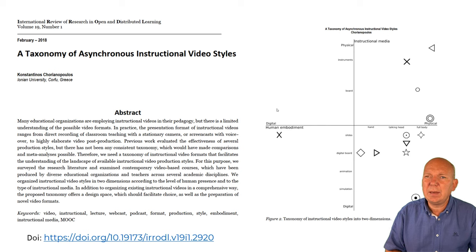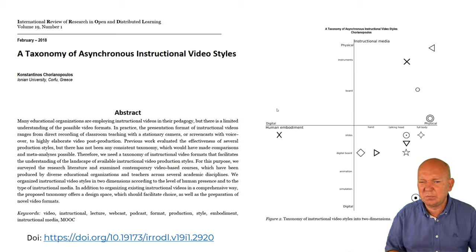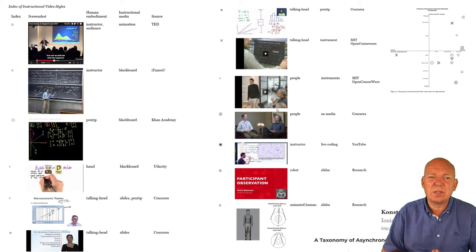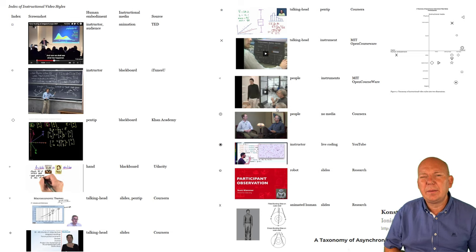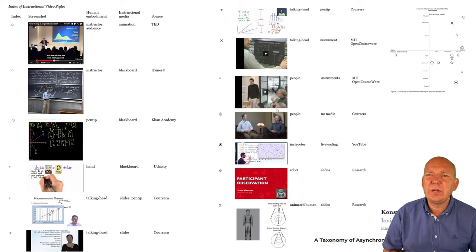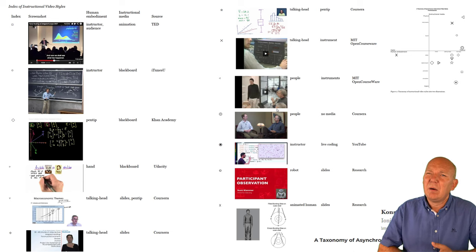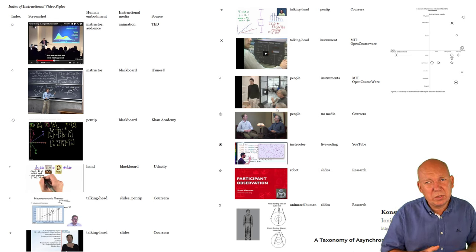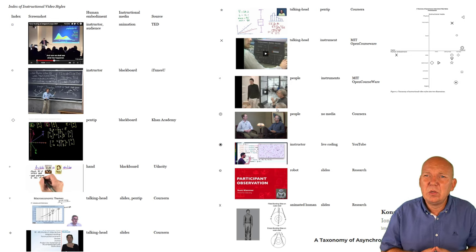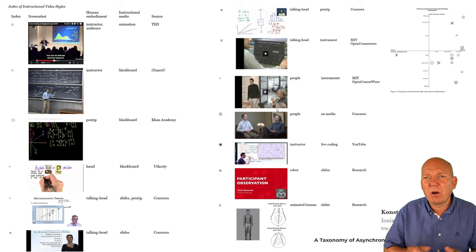The best article we came upon was from 2018: 'Taxonomy of Asynchronous Instructional Video Styles.' This taxonomy is quite good and divides videos into several categories. However, we had a problem fitting all the videos from our courses into it — about 25% of our videos didn't feel like they belonged in any category in that taxonomy. We also felt the approach was more technical, focusing on how you produce the video, based on human interaction and what artifacts are used to communicate with the audience.